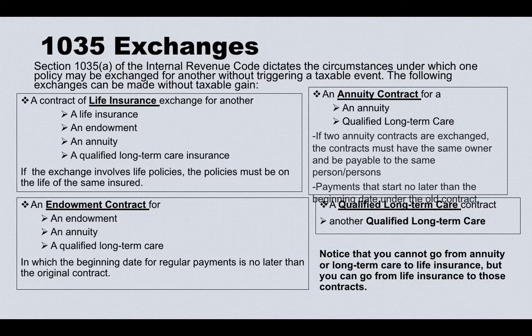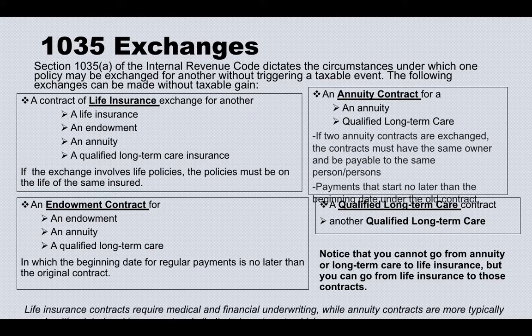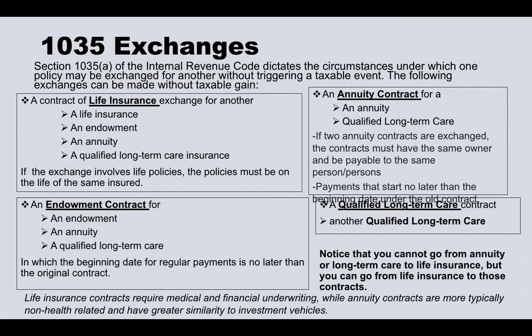Long-term care can only be exchanged to another long-term care policy. Notice that you cannot go from an annuity or long-term care to life insurance, but you can go from life insurance to those contracts. This is because life insurance contracts require medical and financial underwriting, while annuity contracts are more typically non-health related and have greater similarity to investment vehicles.